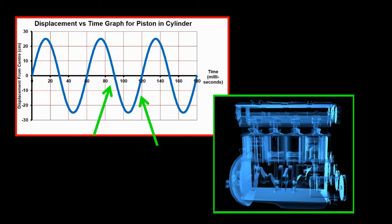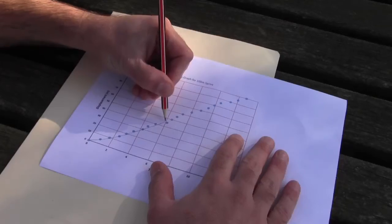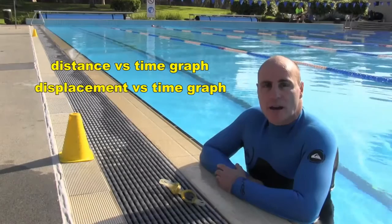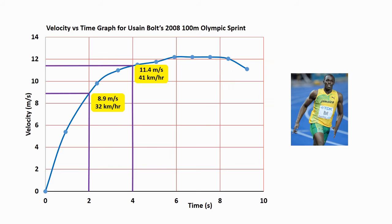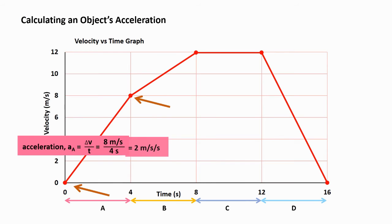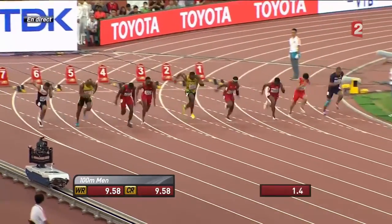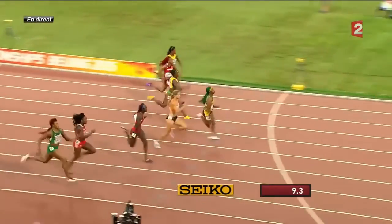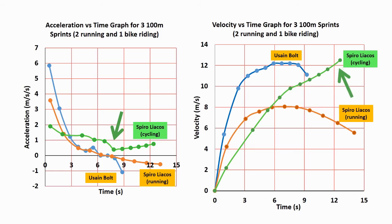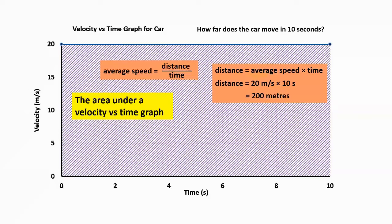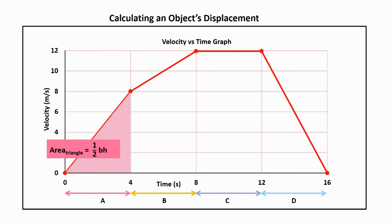Thanks for watching this short excerpt from Shedding Light on Motion Episode 4, Graphing Motion. In this episode of the Shedding Light on Motion series, we look at how graphs are used to analyse an object's motion. We first look at distance versus time graphs and displacement versus time graphs, and then move on to velocity versus time graphs. We finish by examining acceleration versus time graphs. Questions such as when do athletes reach their highest speed, when do they accelerate at the highest rate, and at what point do they stop accelerating are answered in this outstanding program. The student worksheets and practical activities that accompany the series can be downloaded for free from our website at www.liacoseducationalmedia.com. Thanks again for watching.